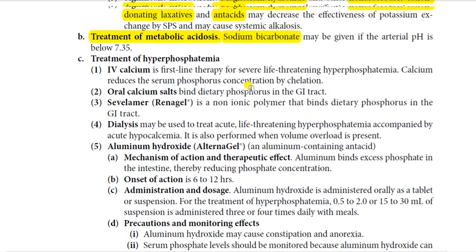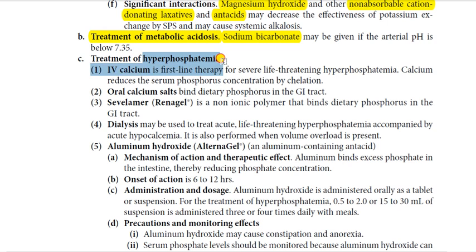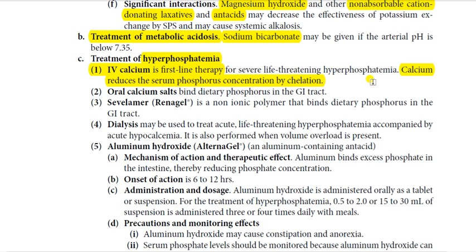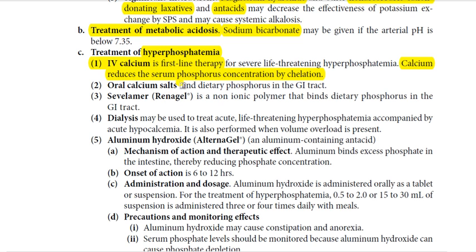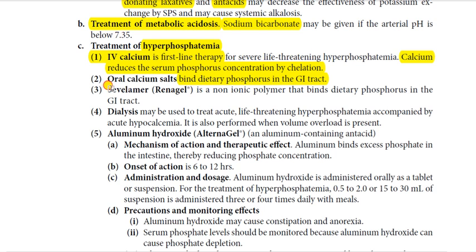Treatment of hyperphosphatemia: IV calcium is the first-line therapy for severe life-threatening hyperphosphatemia. Calcium reduces serum phosphorus concentration by chelation — calcium salts such as calcium chloride form calcium phosphate chelates with phosphorus, thereby reducing serum phosphate levels. Oral calcium salts bind dietary phosphorus in the GI tract, preventing its absorption and also reducing phosphate levels. Additionally, sevelamer — a non-ionic polymer — can be used to bind dietary phosphorus in the GI tract for the same purpose.